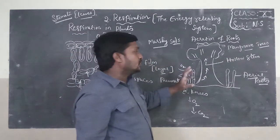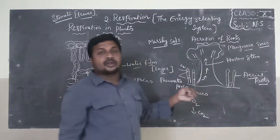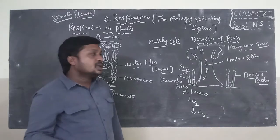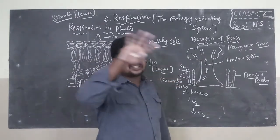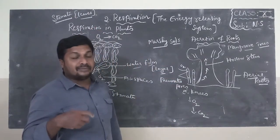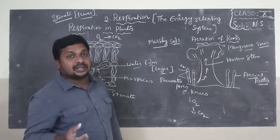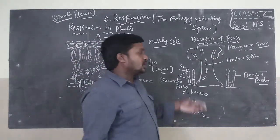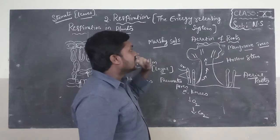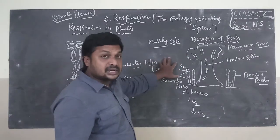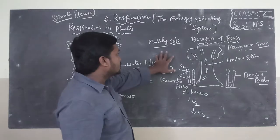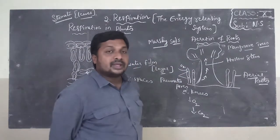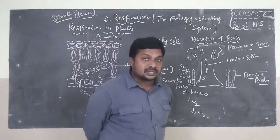This type of adaptation — producing aerial roots — is not found in plants growing in our surroundings, because plants on land have plentiful oxygen available. This adaptation is seen only in plants which grow in marshy soils. That is called aeration of roots — very important from the exam point of view.